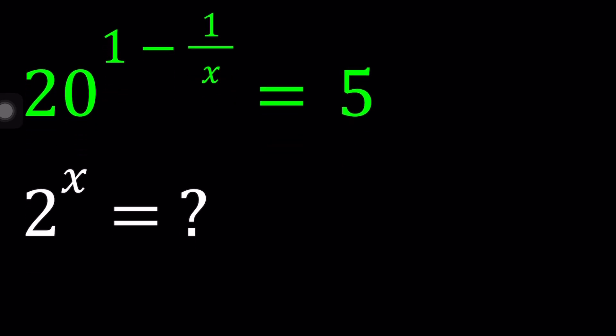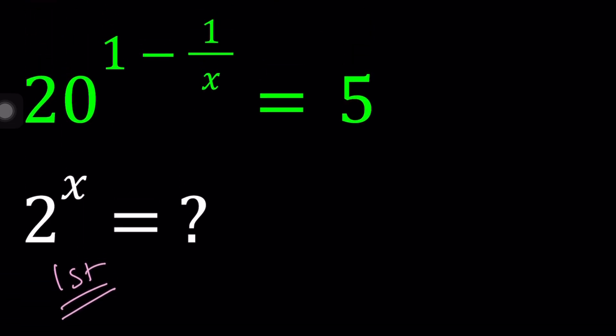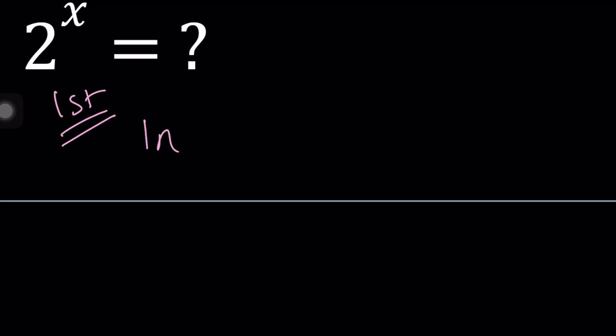So for my first method, I want to go ahead and natural log both sides. So if you natural log 20 to the power 1 minus 1 over x and 5, we're going to get this equation. And keep in mind that we're trying to solve for 2 to the power x, so that should be our goal. But once you ln both sides, this is going to move to the front, which is nice.